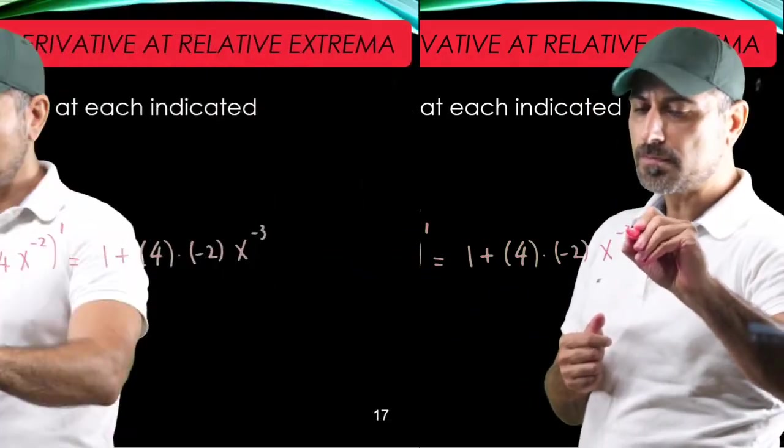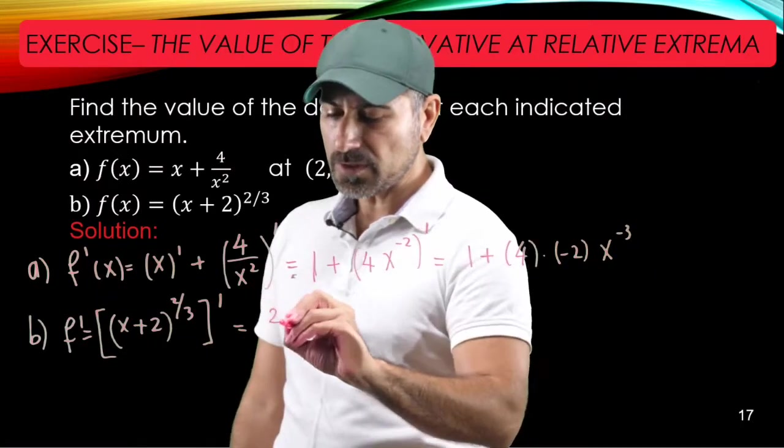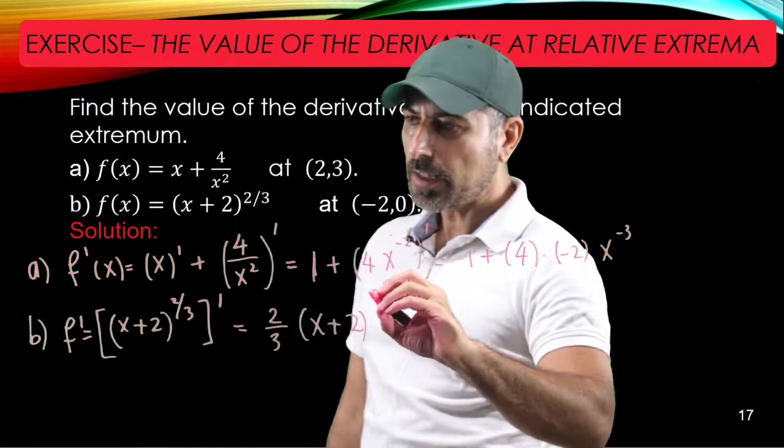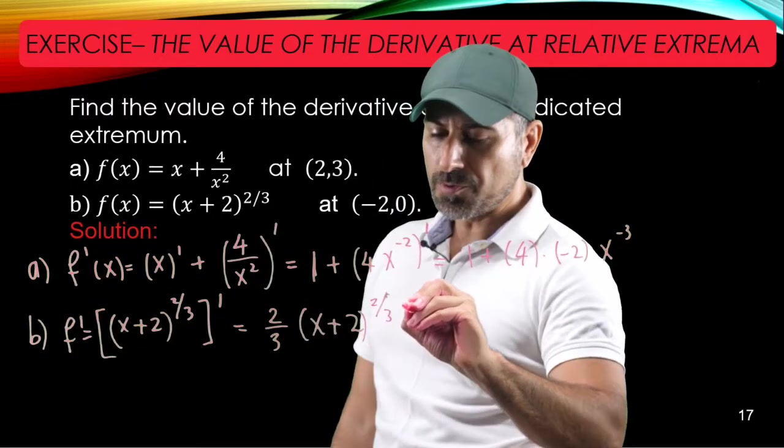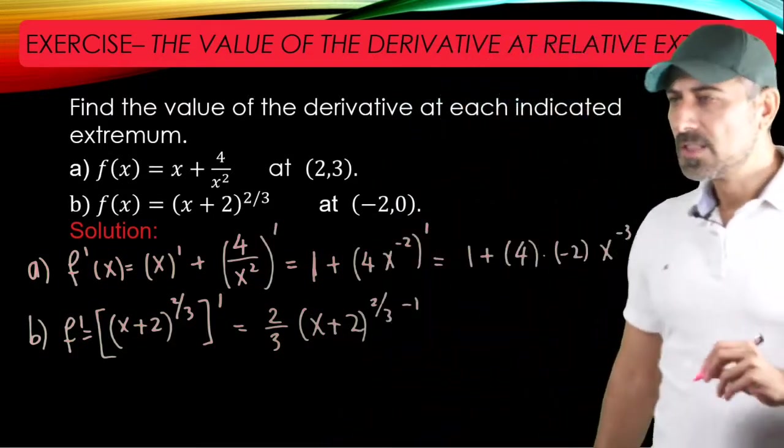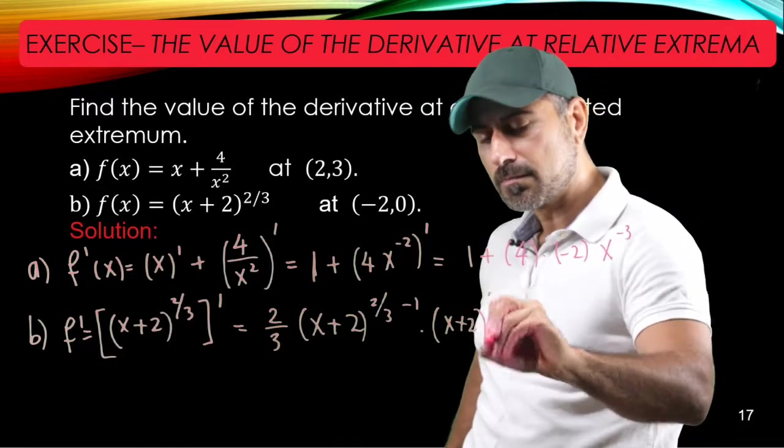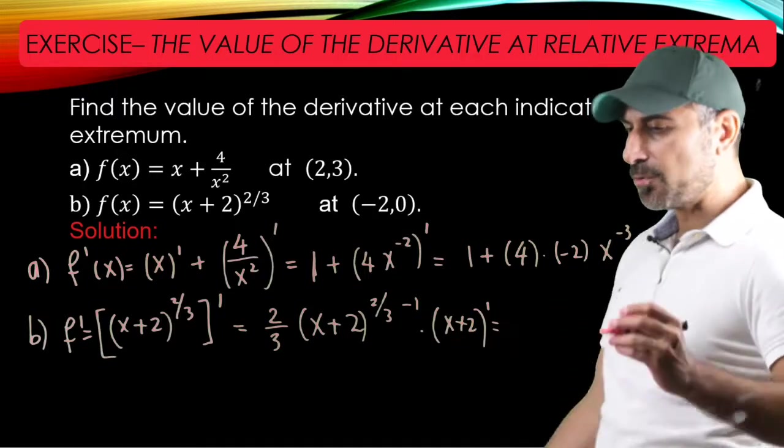The derivative of the outer function is 2 thirds times x plus 2 to the 2 over 3 minus 1, times the derivative of the inner function. But the derivative of the inner function is just 1 plus 0, which is essentially 1.